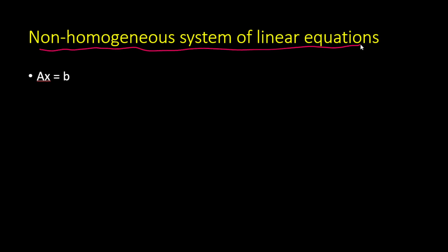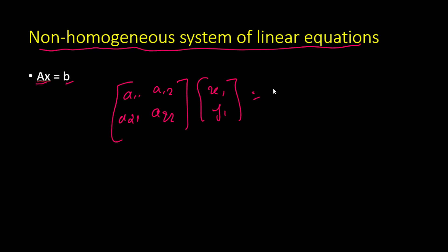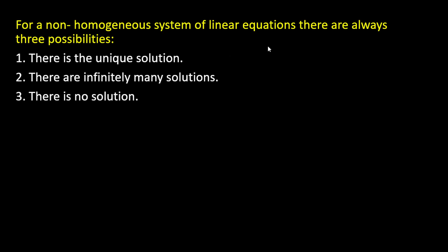We also have another case: the non-homogeneous system of linear equations, where AX = B. That means A = [a11, a12; a21, a22], X = [x1; x2], and the right-hand side is [c1; c2], which is non-zero. In this case, there are three possibilities: either there is a unique solution, or there are infinitely many solutions, or there are no solutions.